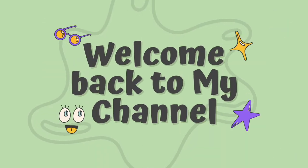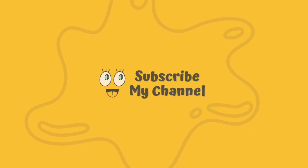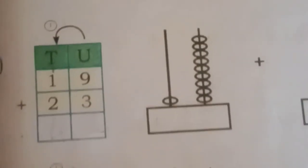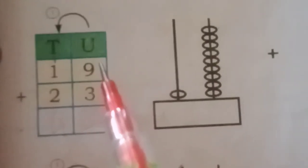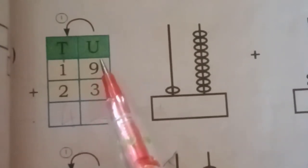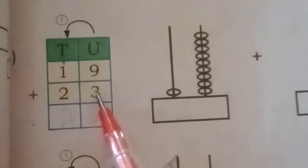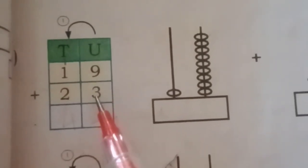Today we will learn addition by using abacus. How to add 19 and 23. 9 plus 3 is equal to... 9, after 9, 10, 11, 12. This is 3, no?